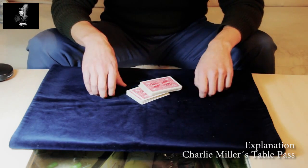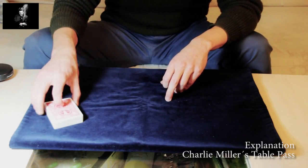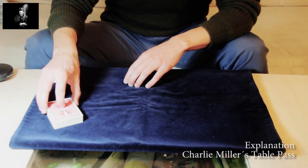And they will see this movement. So what you do is you pivot the packet in a 45-degree angle.